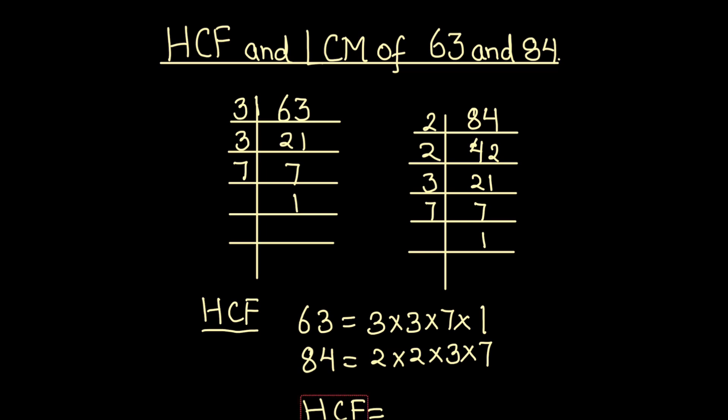Here we see in 63 and 84, there is a common factor of 3. 3 is common to both the numbers and a common factor of 7. So 3 and 7 are the common factors here.